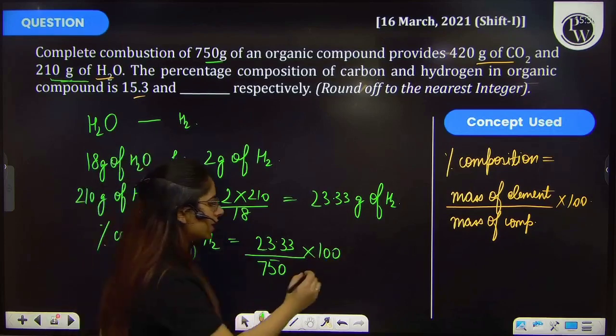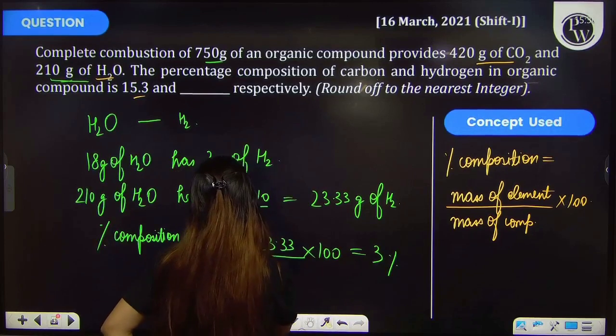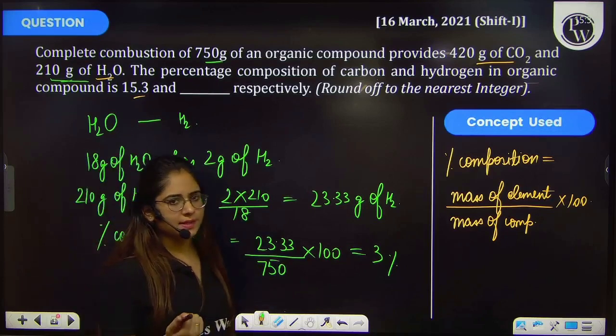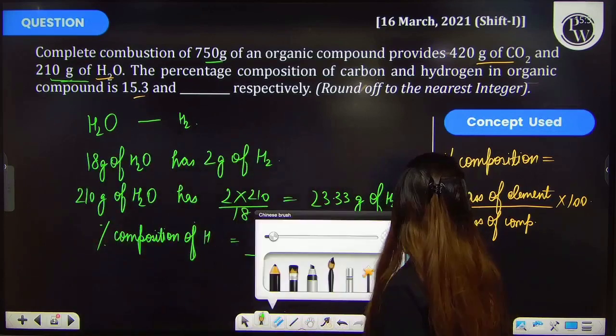On calculating this, you get 3%. That means the total hydrogen present in the organic compound is 3%, so your answer is 3.